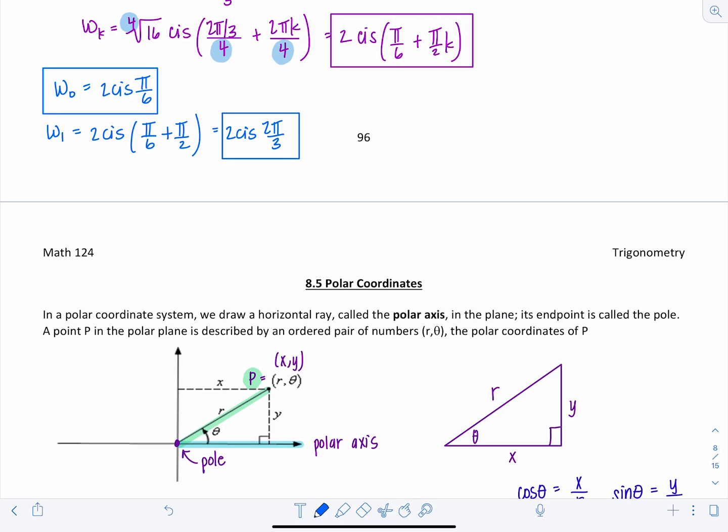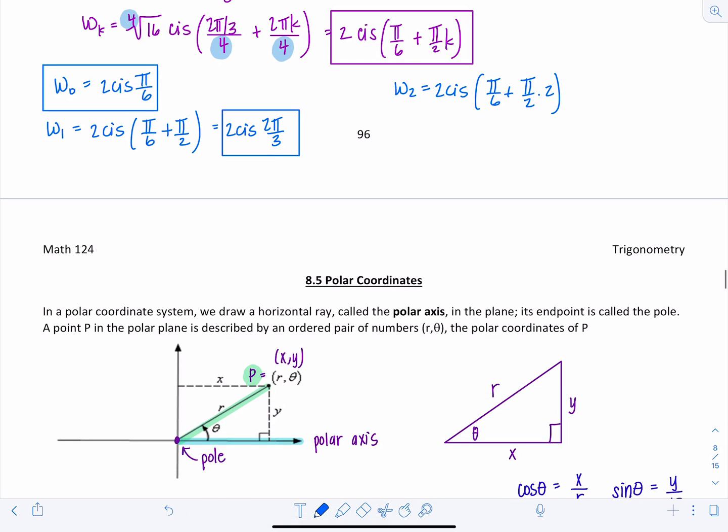W sub 2 is going to be 2 cis pi over 6 plus pi over 2 times 2, so that's just going to be pi. Pi plus pi over 6 is going to be 7 pi over 6. So this is 2 cis 7 pi over 6.